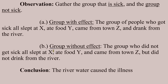they slept in the same spot as the other group, they ate the same food, they came from the same town. But the one difference they have from group A is that they did not drink the water. Then we have good inductive evidence that it was, in fact, the river water that caused the illness, because that was the only antecedent condition that was different between the group that got sick and the group that did not.